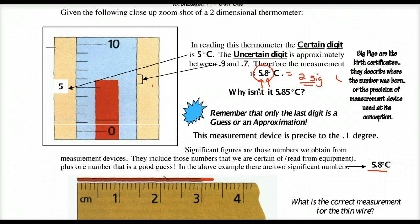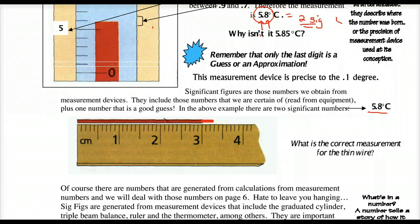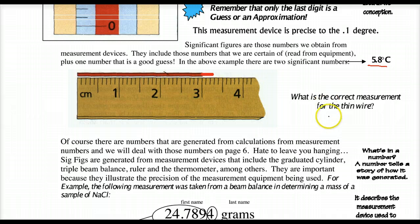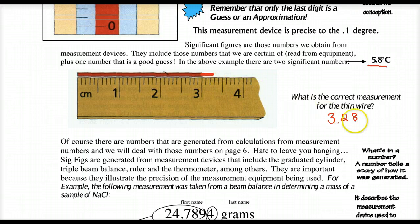Using the class notes, here I have a thin wire. If we were to measure this thin wire, we'd say definitely 3, then 3.1, 3.2 — I'm certain of those. I'm not quite 3.3 in my estimation. So my answer for the thin wire is 3.2 for the numbers I'm certain of, and then I'm going to guess an 8 — guessing 0.8 in between, and of course I'm using units of centimeters.